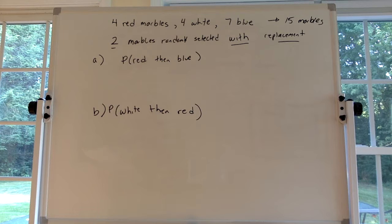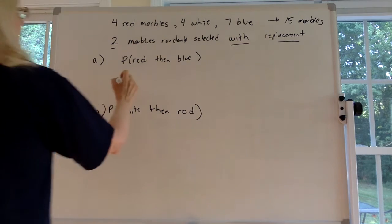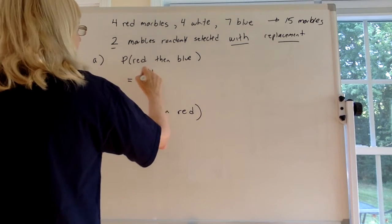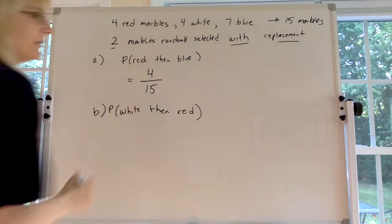So let's figure it out because there's two different trials, two different picks, we're going to use multiplication between our probabilities. So let's figure out what's the probability of getting a red on that first draw. Let's see, there's four reds out of the 15 marbles in the bag, right?